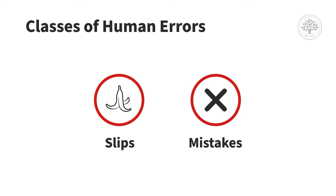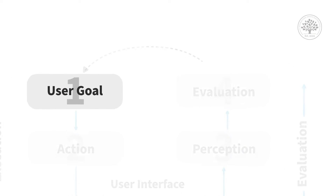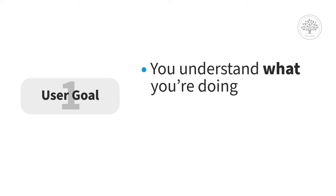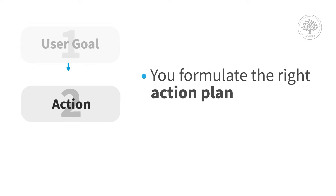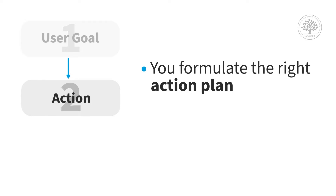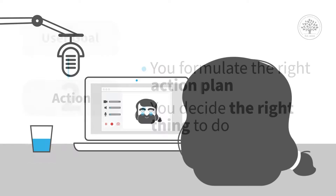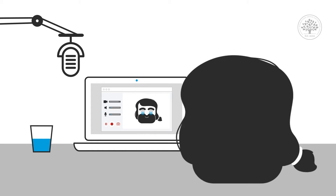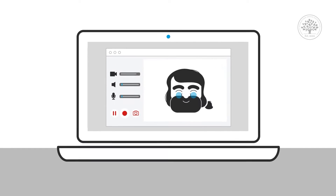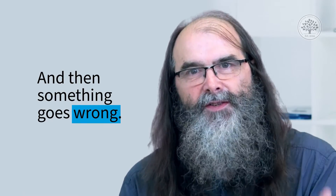A slip happens when you start off doing everything right. You understand what you're doing, your system goals, the way the system works, and what you want to do. You formulate the right action plan and decide the right thing to do. In my video example, I decided I wanted to record my screen with audio from my microphone — I even had the dialog box up — and then something goes wrong and you just don't do it.